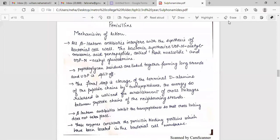All beta-lactam antibiotics interfere with the synthesis of bacterial cell wall. The bacteria synthesize UDP-N-acetyl-muramic acid pentapeptide called PARC nucleotide and UDP-N-acetyl-glucosamine. Peptidoglycan residues are linked together, forming long strands and UDP split off.